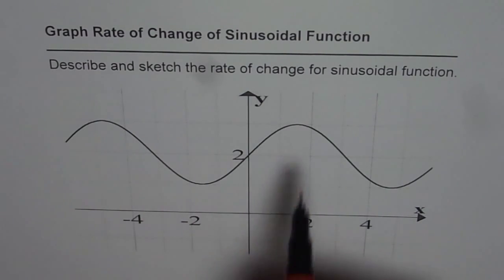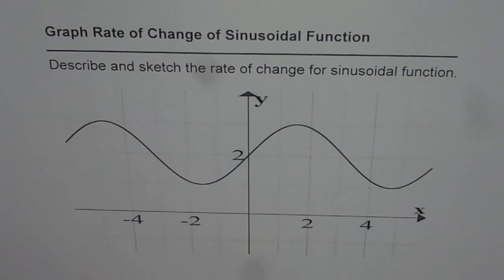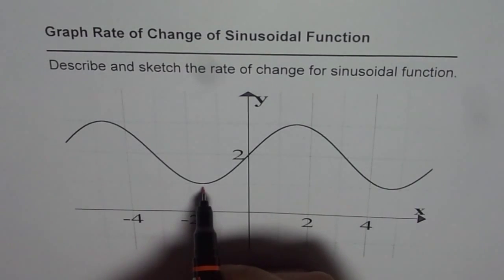A sine wave is drawn for you, translated two units up. Now we need to find the rate of change for this sinusoidal function. We can start from the points which are the peaks, the extremes.